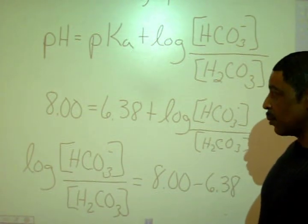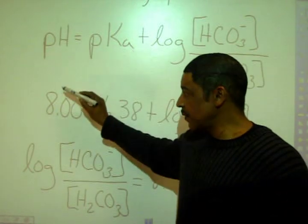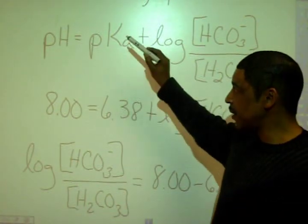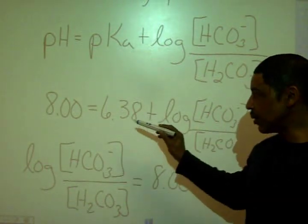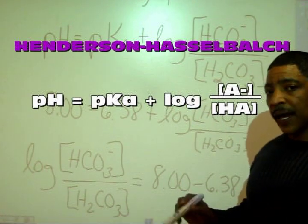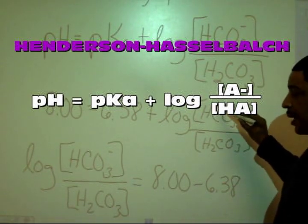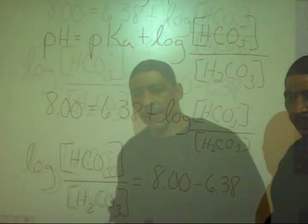In the practice problem, we're given a pH of 8.0 and we calculate a pKa of 6.38, and we're asked to find the ratio of anion to acid.